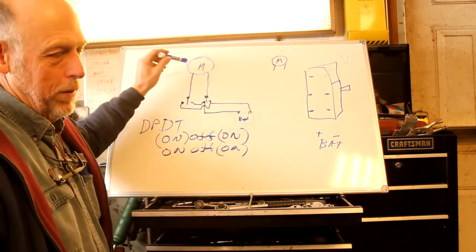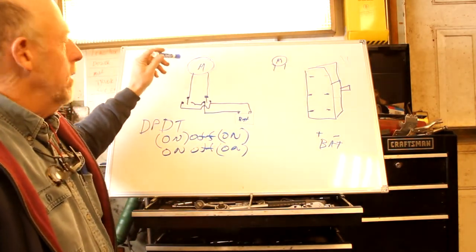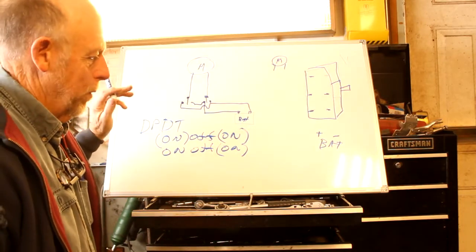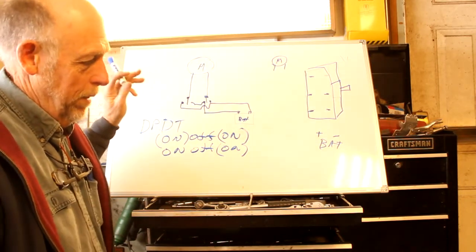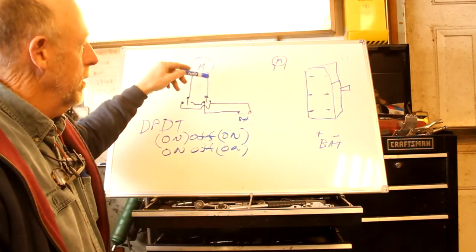But you have to have a motor that is not grounded, that the two wires, the plus and the minus, actually come out of the motor. The negative is not on the grounded hub of the motor.